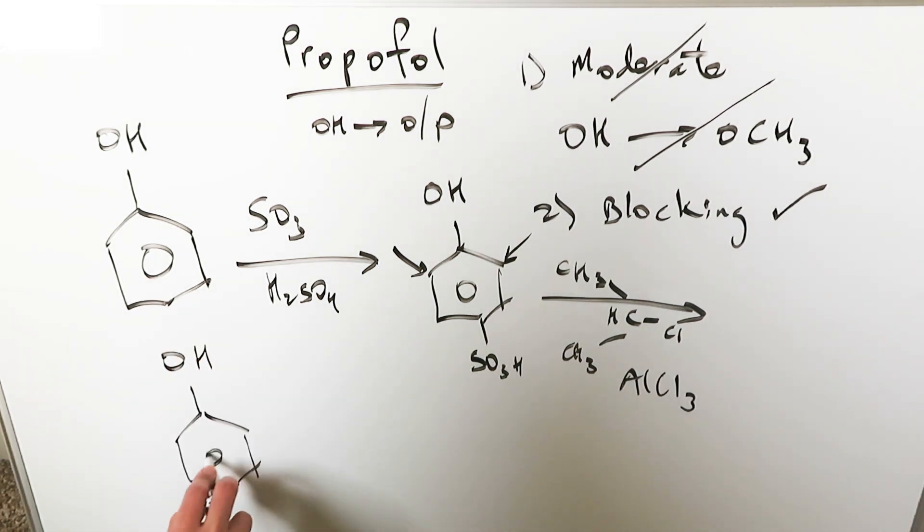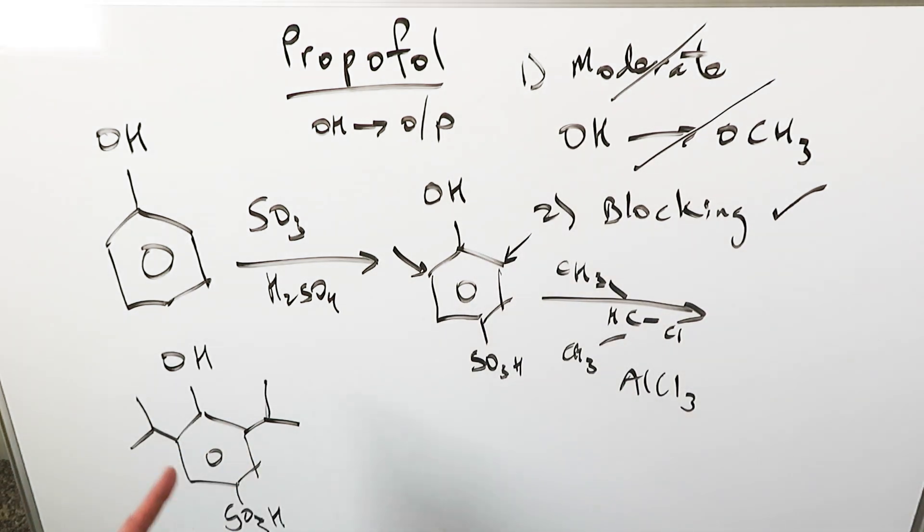OH, your benzene ring, your blocking group SO3H or HSO3, either way is representing, it's fine. And you've added your one isopropyl group here, one isopropyl group here, and we're so close to being done.